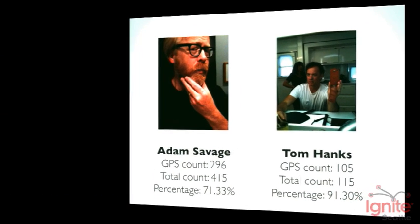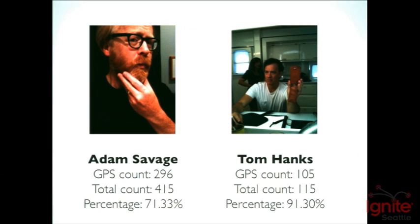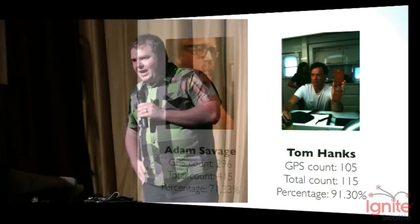But Adam Savage takes the cake for number of photos. Tom Hanks had a whopping 91% of his photos GPS-encoded. I had this idea that if on Castaway, Tom Hanks was able to tweet, we would never get to meet Wilson — which would be a very, very large tragedy.